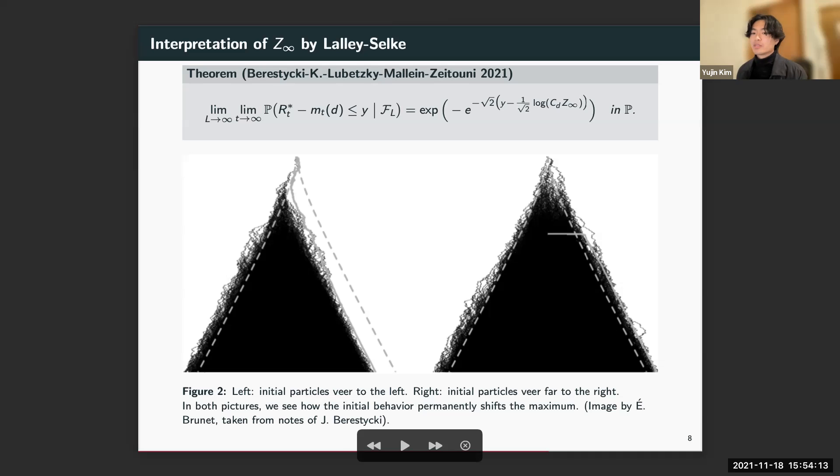The correct interpretation of this is as follows: what this means is that Z_∞ is really built from the behaviors of the particles up to time t, and so somehow the behavior of the particles from the beginning of the tree permanently shifts the maximum. This is what's depicted here in this really nice image of Eric Brunet. In the left, we see that the initial particles swerved to the left and also didn't branch too much, so we actually have a permanent negative shift in the maximum. The dotted line is supposed to be like empty. In the right-hand side, the opposite happened, and so you can observe a right shift.